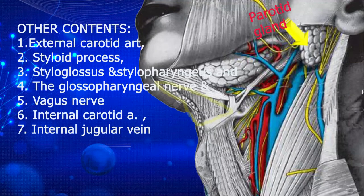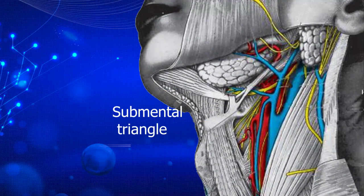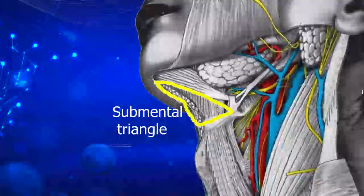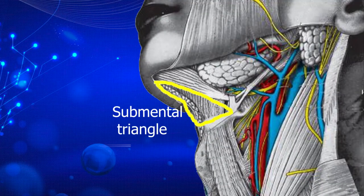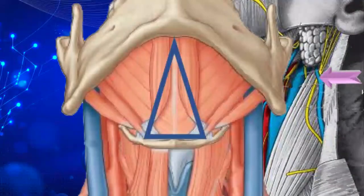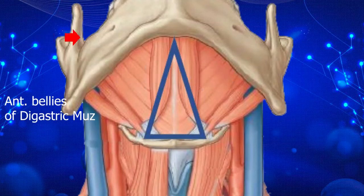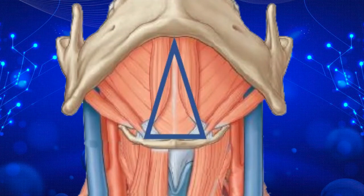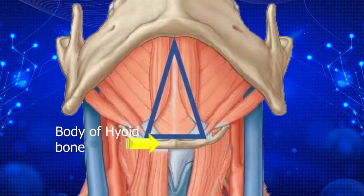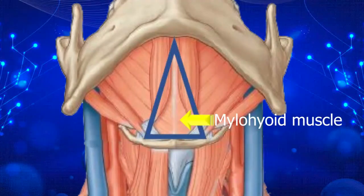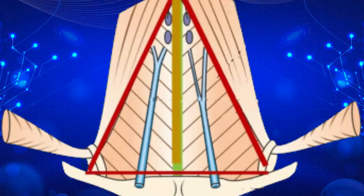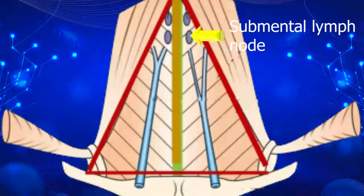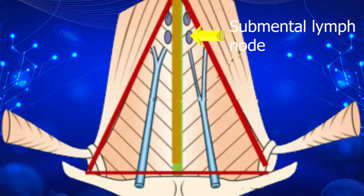We will move to the next triangle, that is the submental triangle. All the triangles, both in the anterior triangle and posterior triangle, are all paired except for this submental triangle. The submental triangle is located between the two anterior bellies of the digastric muscles. Its apex is at the chin, while its base is the body of the hyoid bone. The floor is formed by the mylohyoid muscles. The contents of this triangle are basically the submental lymph nodes, which drain the floor of the mouth. We can also see small veins that unite to form the anterior jugular vein.